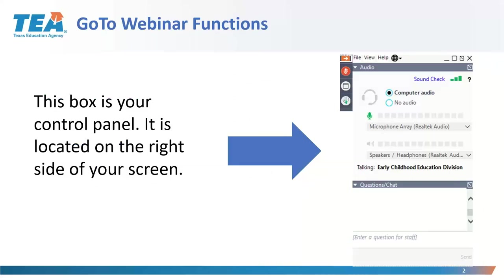If you are new to GoToWebinar, this is your control panel — that box you see. You can click the little red box with a white arrow to minimize it. The red microphone means you're muted; green means we can all hear you. This is the raise hand feature, but you don't have to use it. Our group is small enough that you can pretty much unmute yourself if you have a question. I'll go ahead and unmute all of you in just a second.